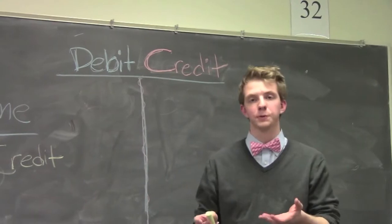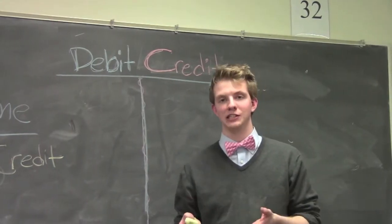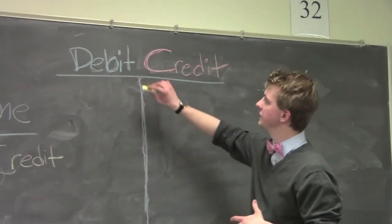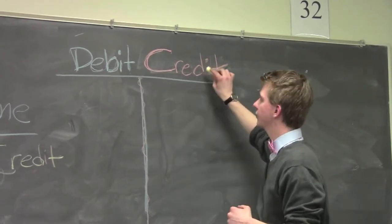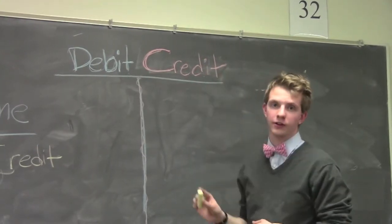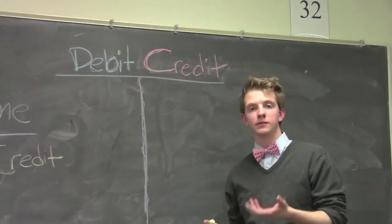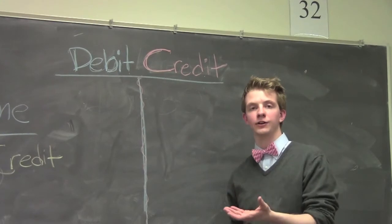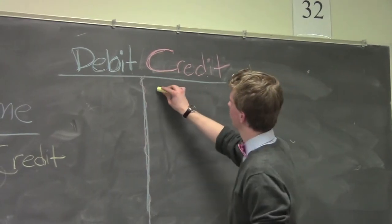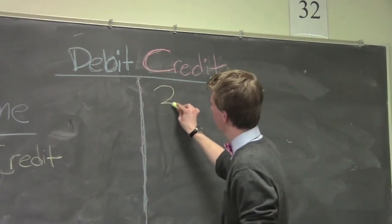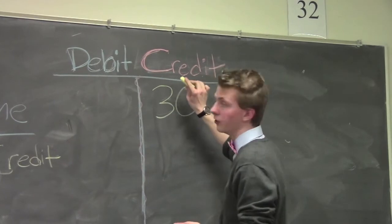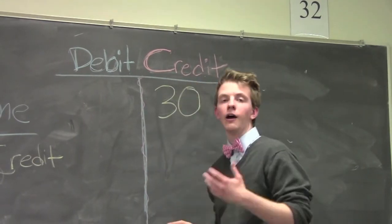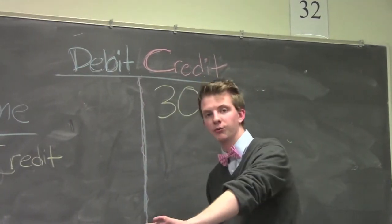Now let's put this all into a t-chart. In order to do this, we need to put debits on one side and credits on the other. When we bought the material, that was thirty dollars in credits, so we're going to write thirty dollars on the credit side.